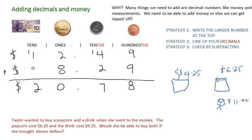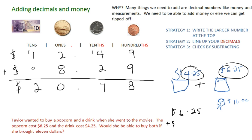So what do I need to do to solve this? Well, I think I'm going to have to take the cost of the drink and add the cost of the popcorn to solve that — I have to find out how much money she needs altogether. So I have to write the larger number at the top, which is six dollars and twenty-five cents, and then add four dollars and twenty-five cents. I'm lining the decimals up. Five cents plus five cents is ten cents. One plus two plus two is five, lining the decimals up. Six dollars plus four dollars is ten dollars.